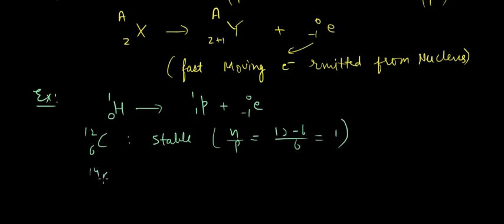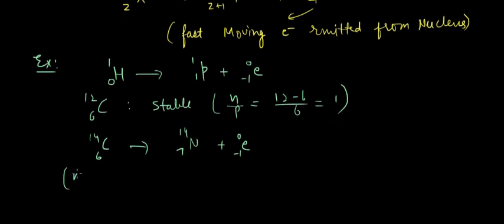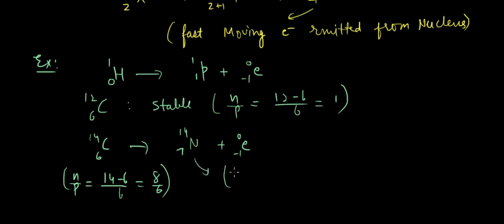If we talk about Carbon-14, it actually emits a beta particle, converting itself into nitrogen. For Carbon-14, the n/p ratio is (14 minus 6) divided by 6, which equals 8 over 6. For nitrogen, the n/p ratio would be (14 minus 7) divided by 7, which equals one.